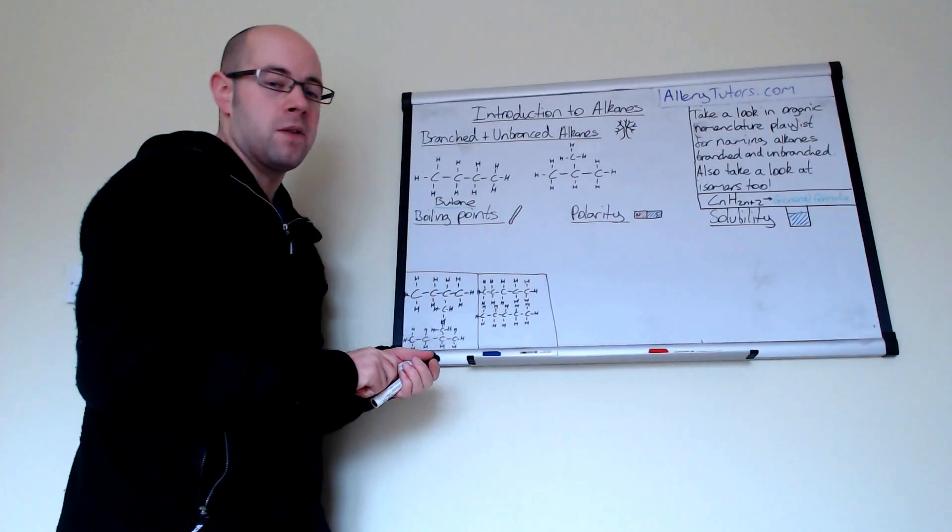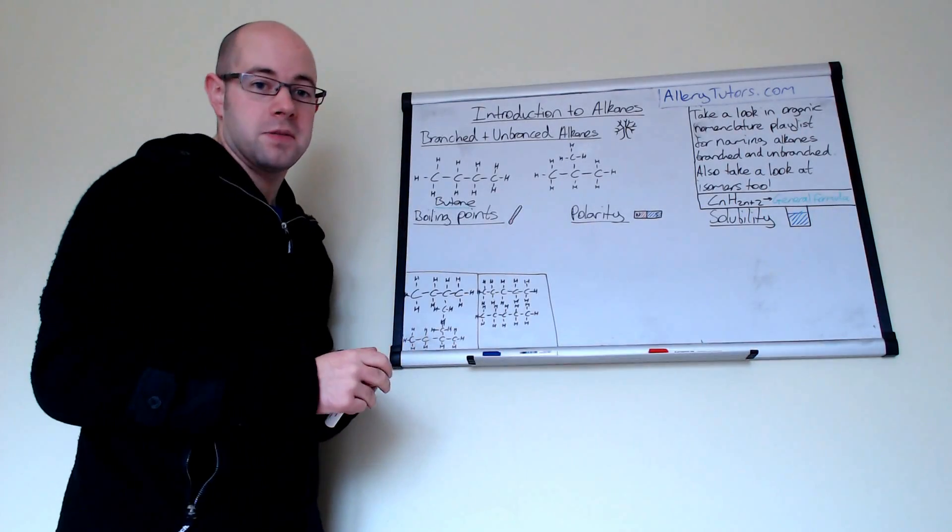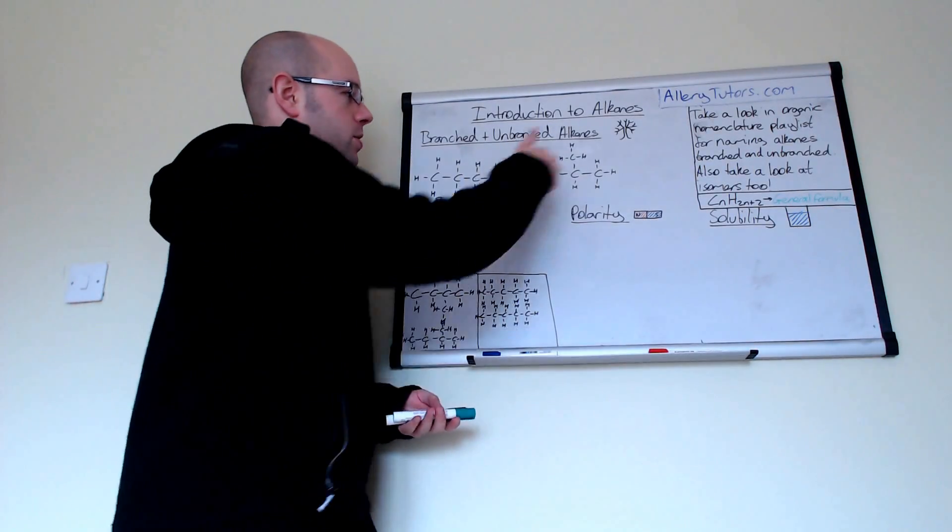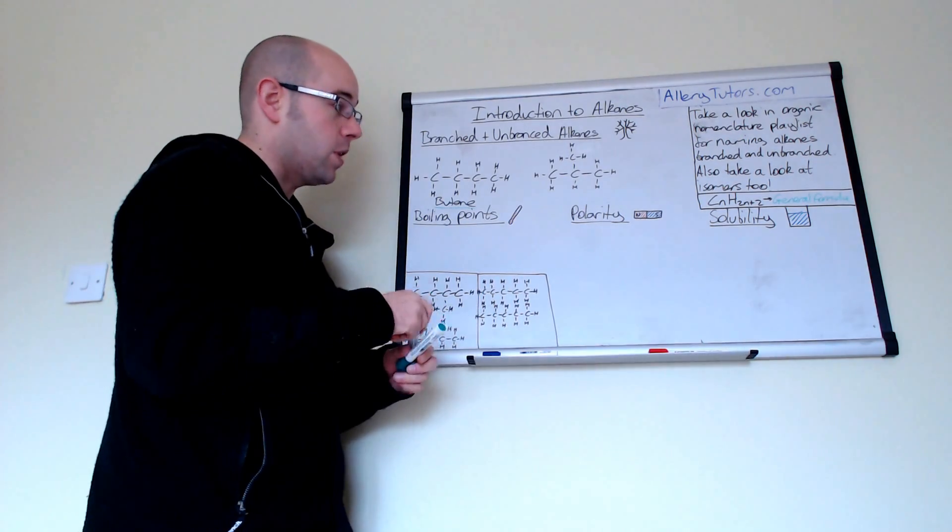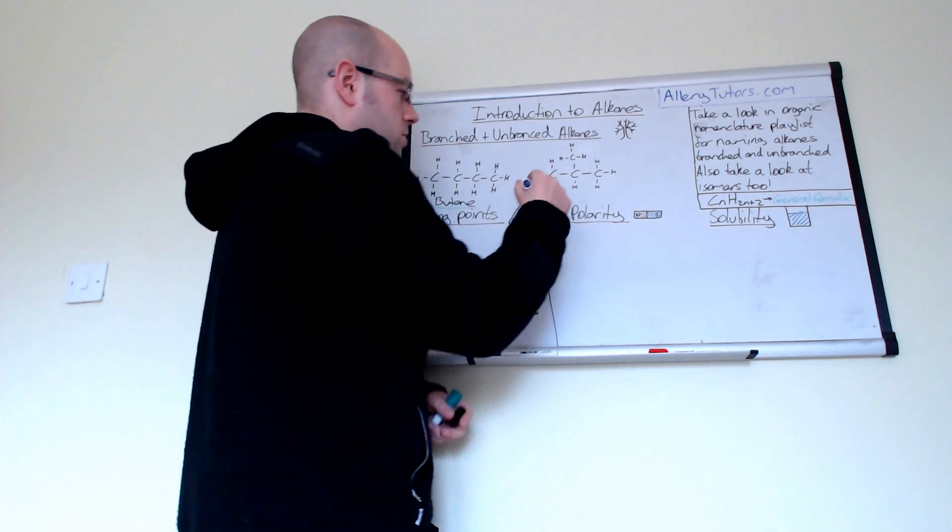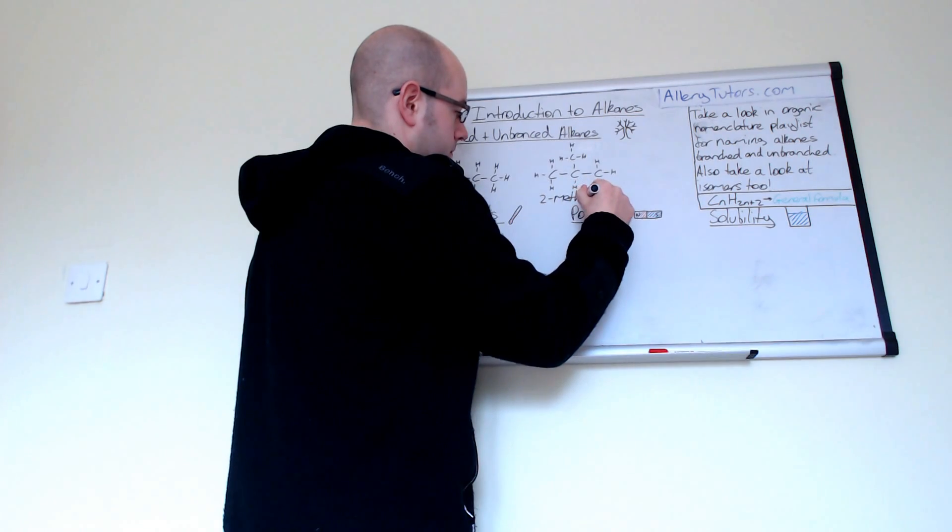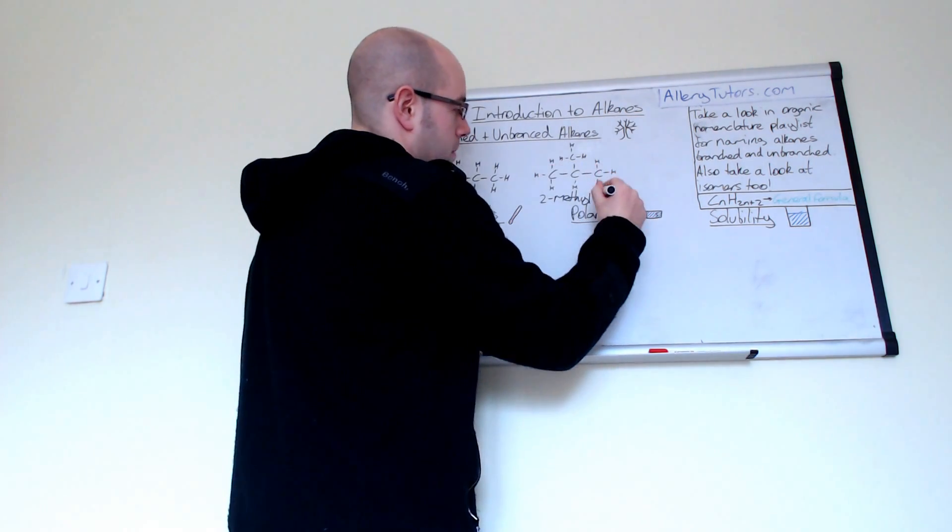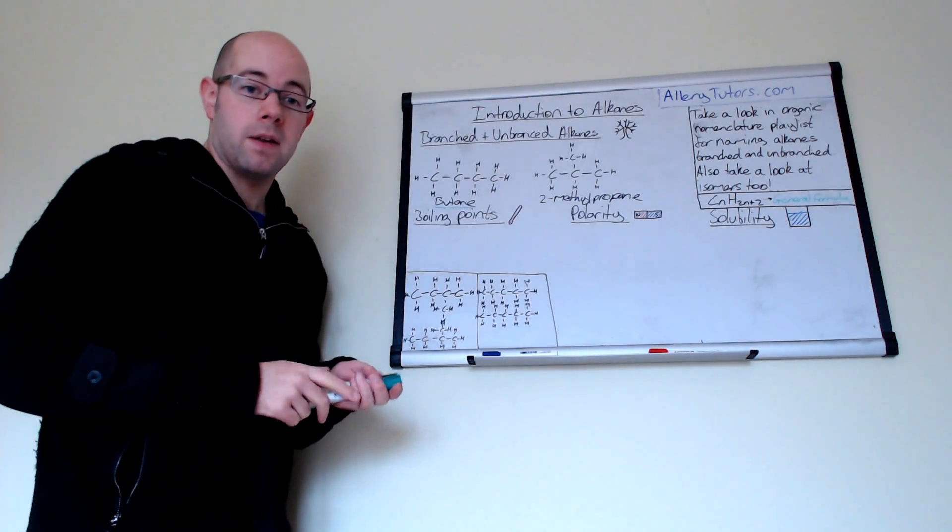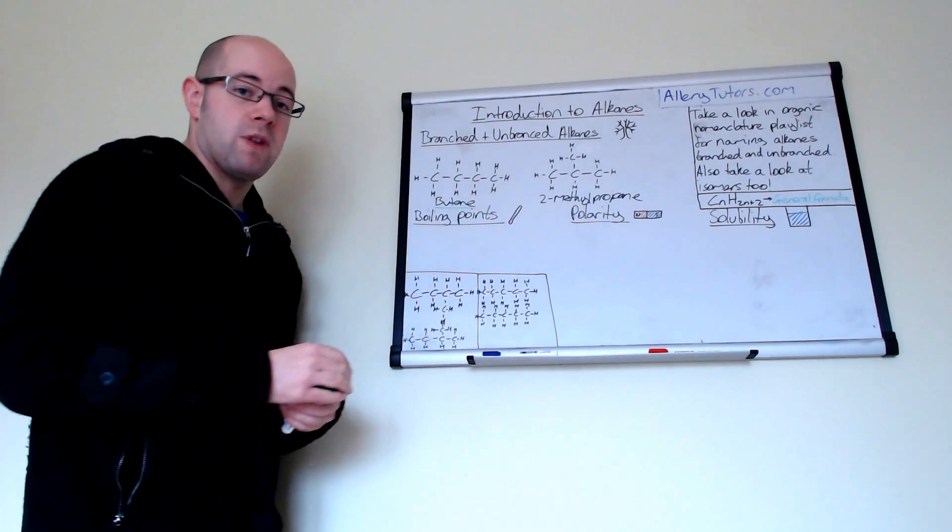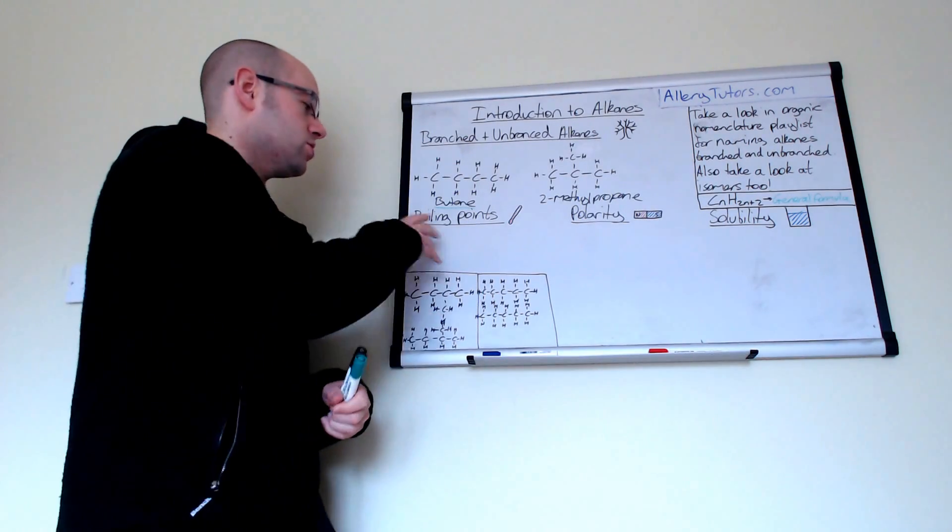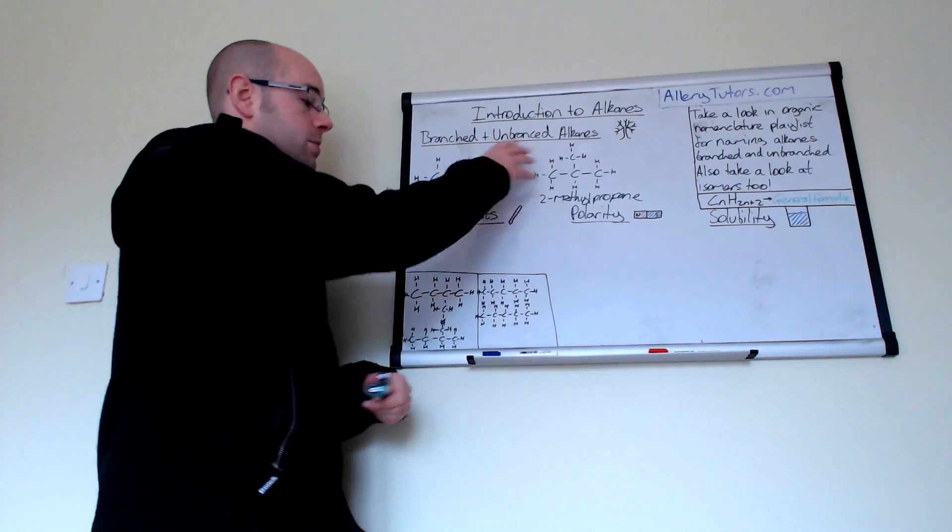But we can have an isomer as well of this. So this isomer here is a chain isomer because we've actually altered the chain. It has the same number of carbons and hydrogens which means it has the same molecular formula but the actual length of the chain is changed. As you can see here, we have a methyl group stuck on the second carbon in the middle. So in terms of nomenclature, that is 2-methyl and then we have 3 there which means that's propane. So these two are isomers of each other but they're both alkanes. Now this actually has a big effect on their actual physical properties such as boiling point.